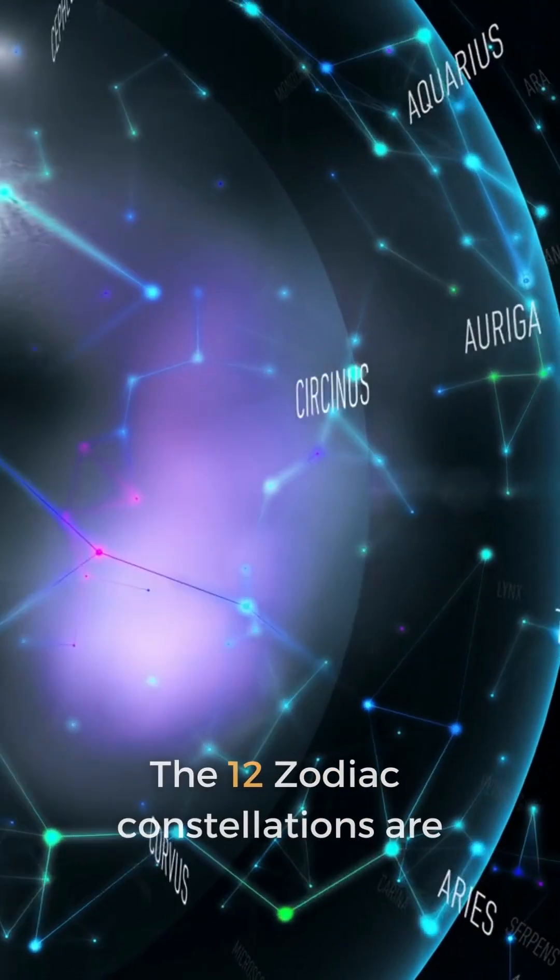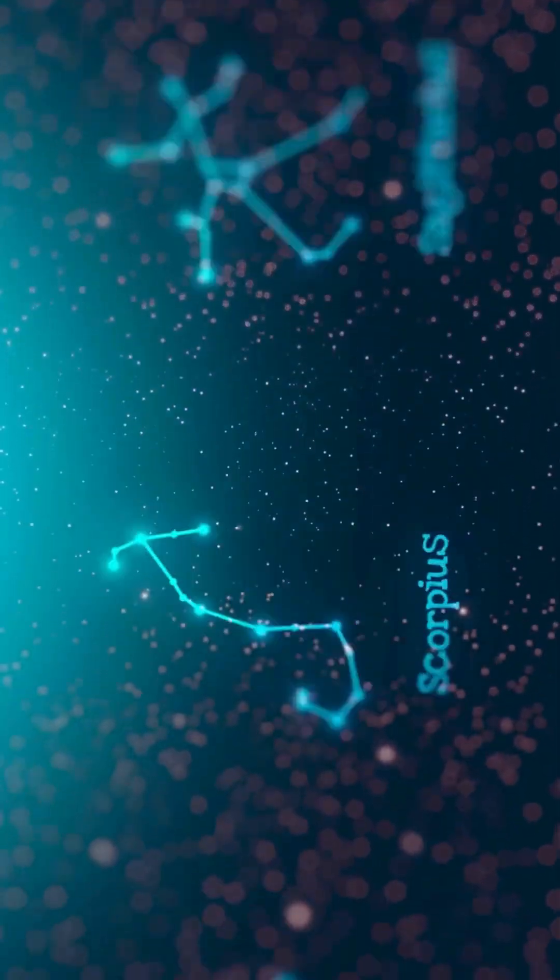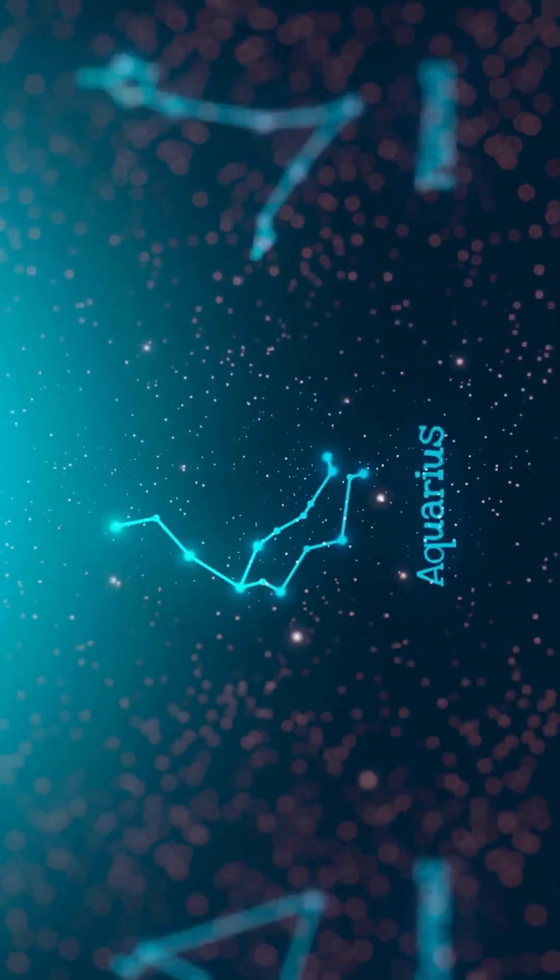The 12 zodiac constellations are Aries, Taurus, Gemini, Cancer, Leo, Virgo, Libra, Scorpio, Sagittarius, Capricorn, Aquarius, and Pisces.